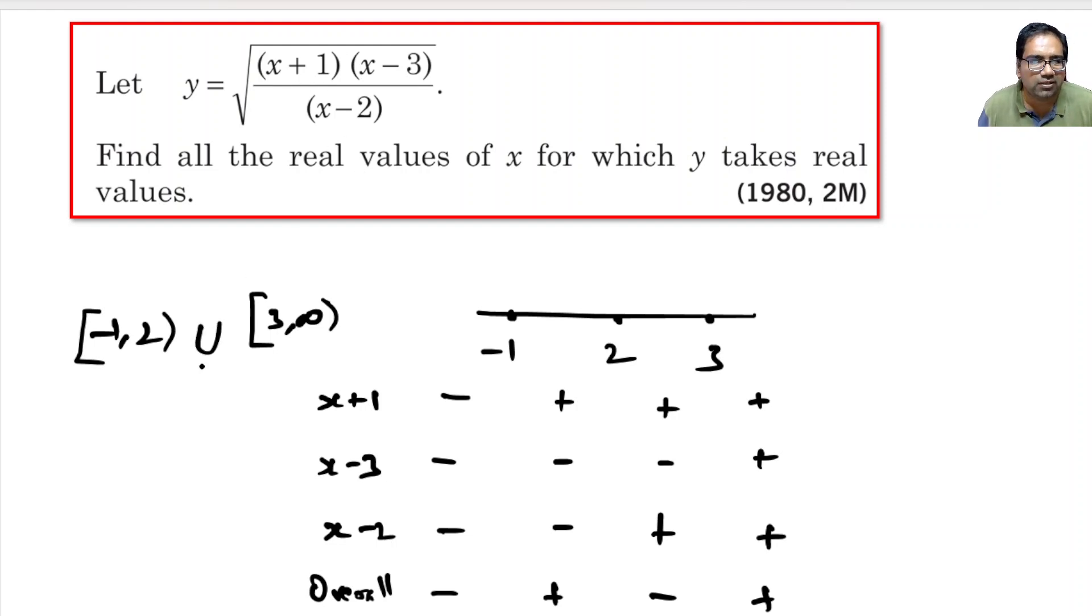So, the correct answer is minus 1 close bracket to 2 open bracket, union, close bracket 3 to infinity.